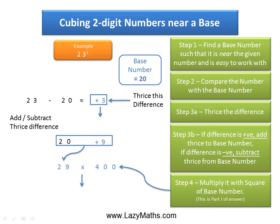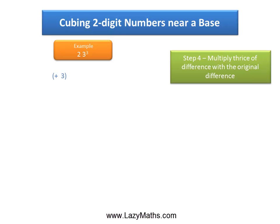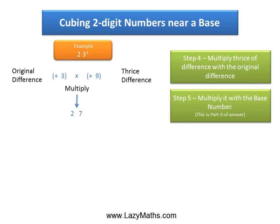We multiply 29 with 400 and we get 11,600 as part 1 of the answer. For part 2, we take the difference between the base number and the original number, which is positive 3, and thrice the difference, which is positive 9, and multiply the two together. Positive 3 times positive 9 equals 27, and then we multiply this by the base number: 20 times 27 gives us 540, which becomes part 2 of the answer.